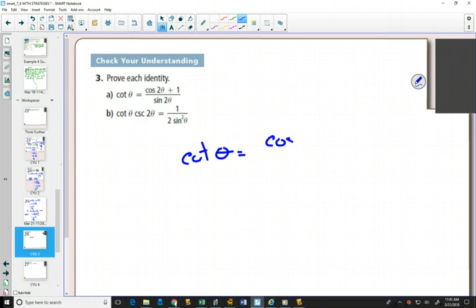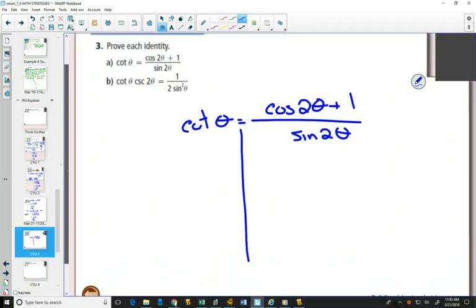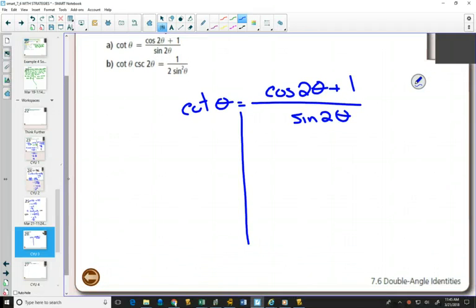by writing it out, drawing our line to separate things. With proofs that have a double angle identity, and this one has two of them—it has cos 2θ and sin 2θ—whenever you have the double angle identities in a proof, it usually makes the most sense to change them to one of the formulas so that you can solve this proof. We won't be able to solve this proof by having double angles on one side and not double angles on the other.